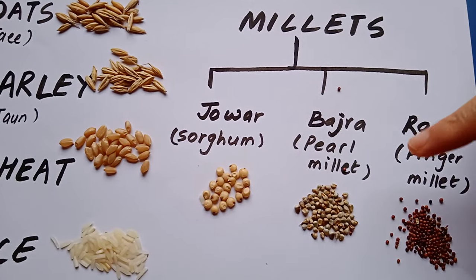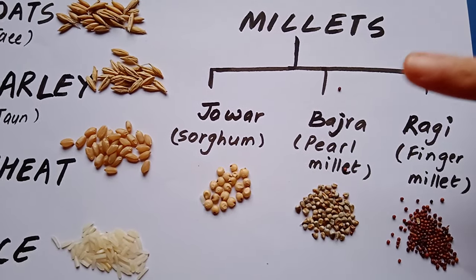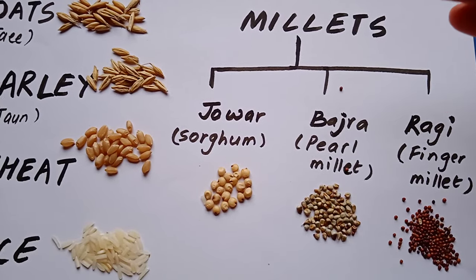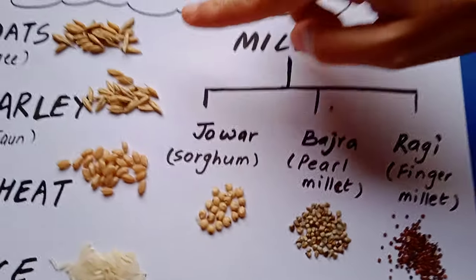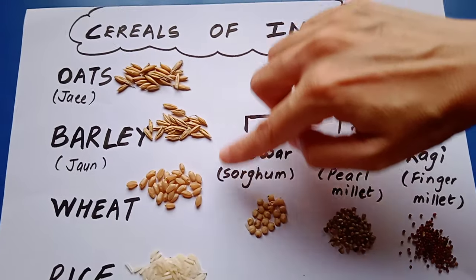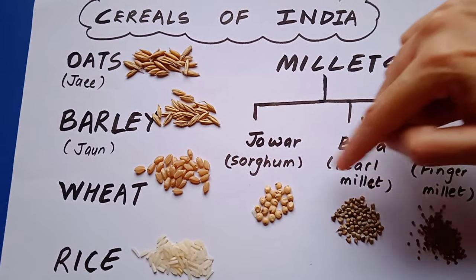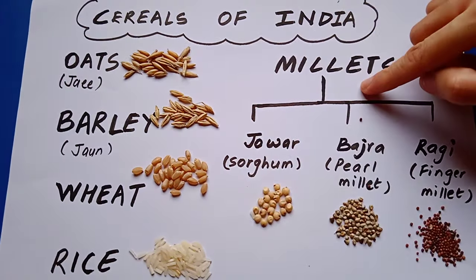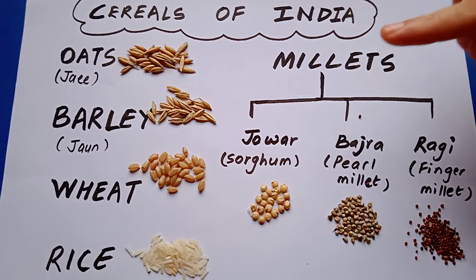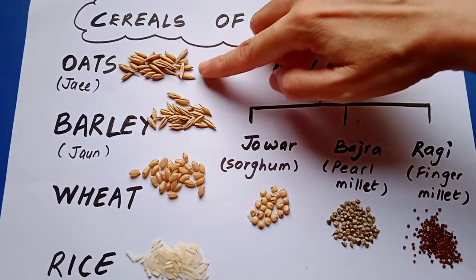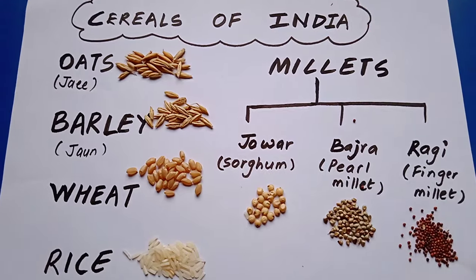You all can see that they look quite similar to seeds. But dear students, they are not seeds actually - they are also cereals. The difference is that they are small-grained cereals, and the other important ones - oats, barley and wheat - are big-grained cereals. But they are of course a part of cereals only, and they have the same nutritional value as oats, barley, wheat or rice or other cereals.